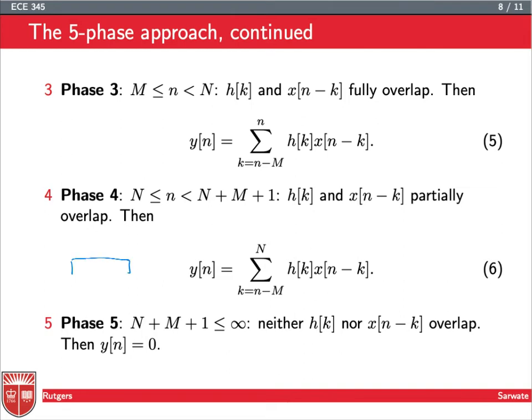In phase 4, we have partial overlap in the other direction. Here we have n, this is n-m, this is capital N, and this is 0. We can see that now we have a sum from n-m to capital N, because this is the portion of overlap, and we're summing up our convolution sum.